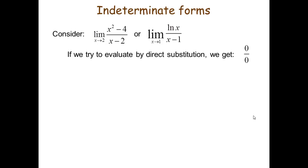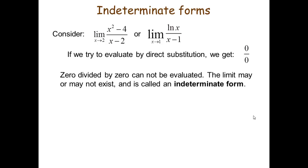So if we try to evaluate by direct substitution, as you can see on the screen, we get 0 by 0. So we need to evaluate this because 0 by 0 is an indeterminate form — we don't know what the value of 0 by 0 is.